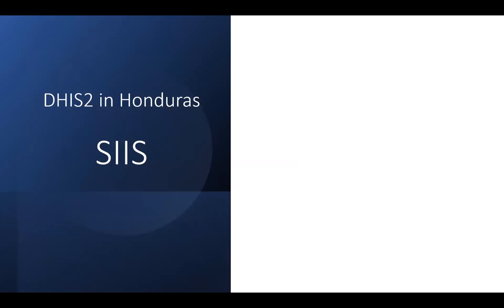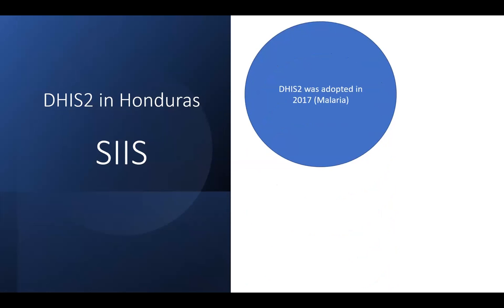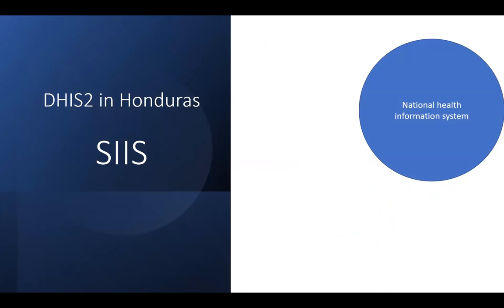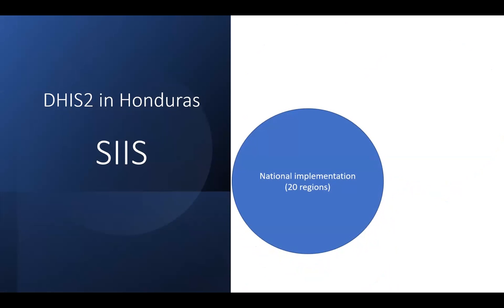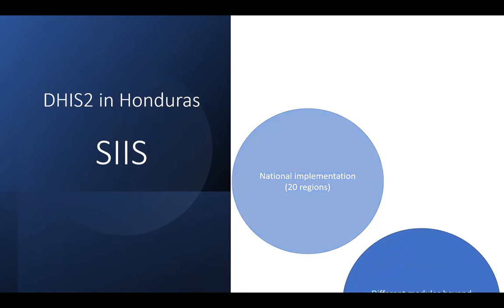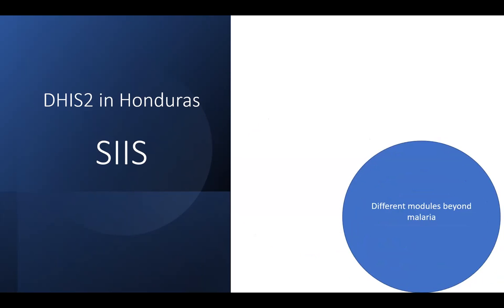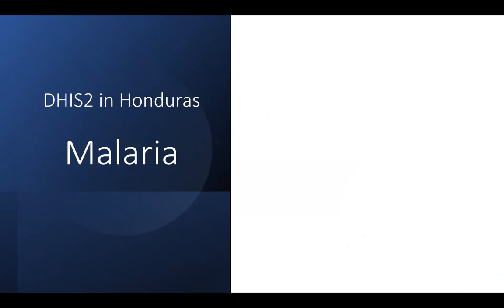In Honduras, the DHIS2 implementation is now the national implementation; however, DHIS2 was adopted in 2017 just for malaria at that point. This is a national implementation including 20 regions in the country, and the DHIS2 implementation — which is now the national health information system — has a lot of different modules, most of them beyond malaria.